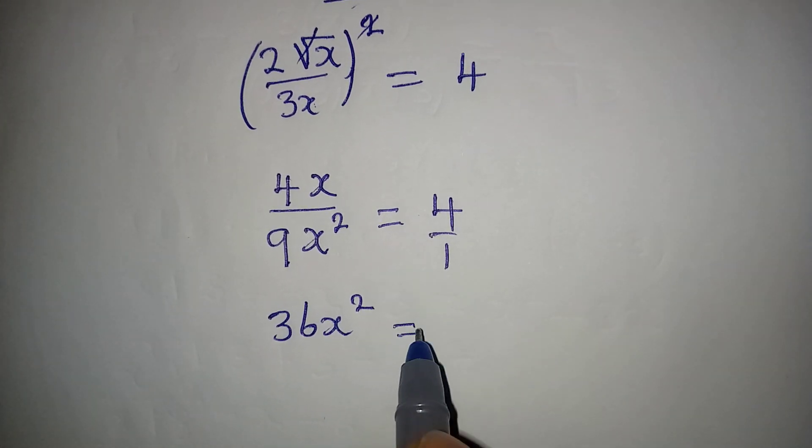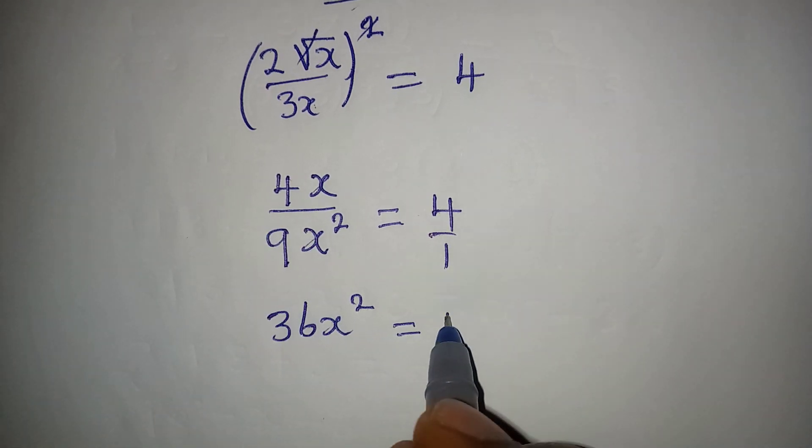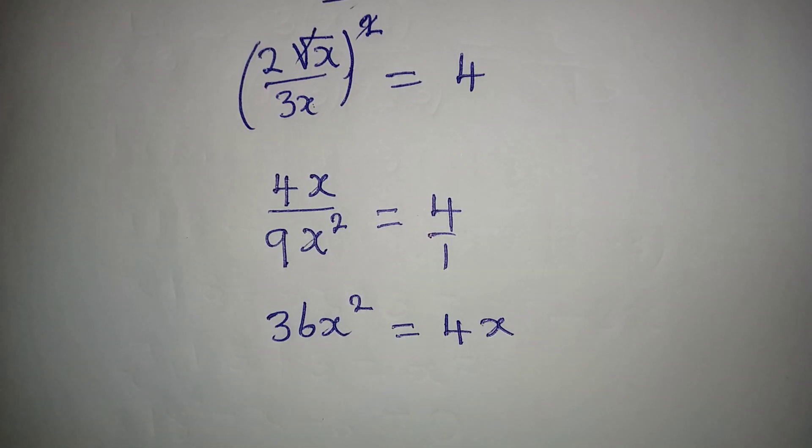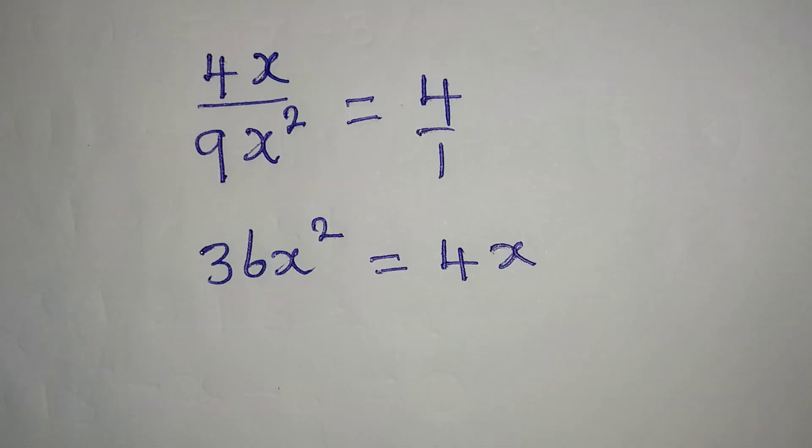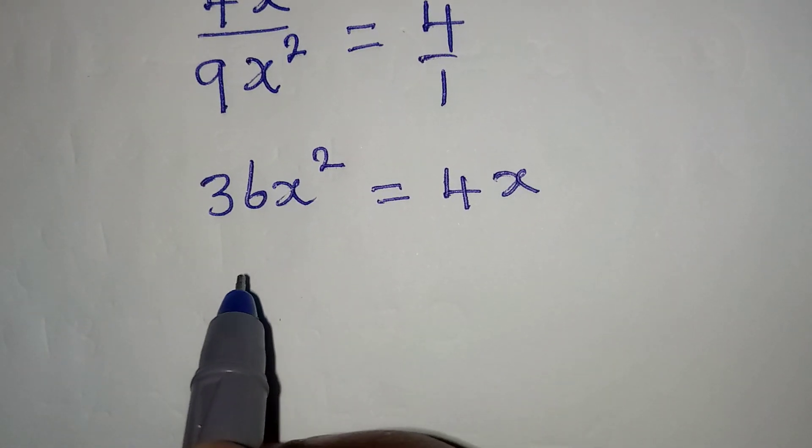9 × 4 will give us 36, so we have 36x², and it's equal to 4x times 1, which is 4x. Now the next thing to be done is to bring this to the left.